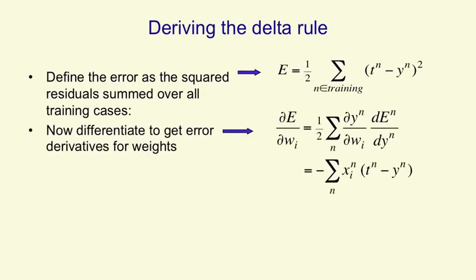We now differentiate that error measure with respect to one of the weights, w_i. To do that differentiation, we need to use the chain rule. The chain rule says that how the error changes as we change a weight will be how the output changes as we change the weight times how the error changes as we change the output. The chain rule is easy to remember. You just cancel those two dy's, but you can only do that when there's no mathematicians looking.